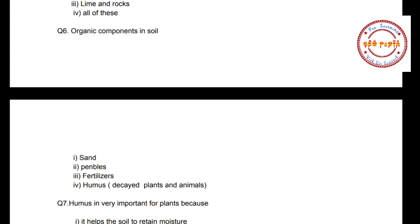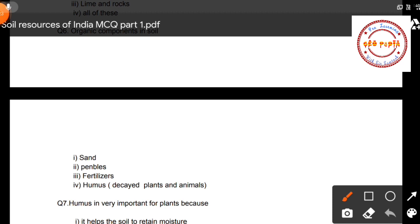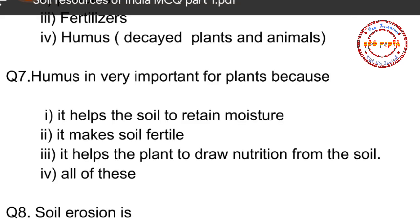Question number six: Organic components in soil — option one: sand, option two: pebbles, option three: fertilizers, option four: humus, that is decayed plants and animals. The correct option is option number four — humus — which is formed by the decaying of plants and animals. The organic component in soil is humus.